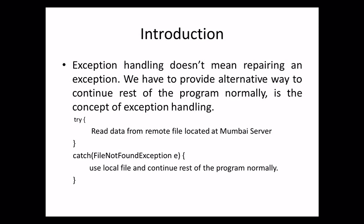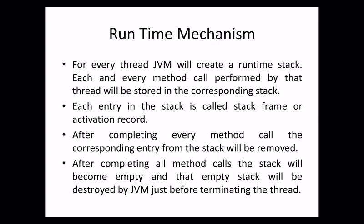It is highly recommended to handle exceptions because the main objective of exception handling is graceful termination of the program. Exception handling doesn't mean repairing an exception — we have to provide an alternative way to continue the rest of the program normally. We are not going to repair that exception; we are just providing the alternative way. For example, in the try block the risky code is there — reading data from a remote file located at Mumbai server. If that file is not found, the catch block handles the FileNotFoundException, and we use a local file and continue the rest of the program.